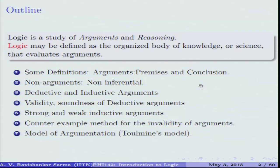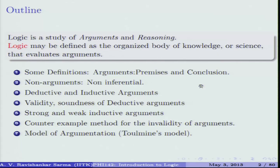Soundness ensures it's not enough for an argument to be valid — the premises must also be true. We want to avoid arguments that are valid but not sound. For inductive arguments, we assess whether they are strong or weak. An important method to identify invalidity is the counter-example method: create an instance with true premises and a false conclusion, and the argument is invalid.